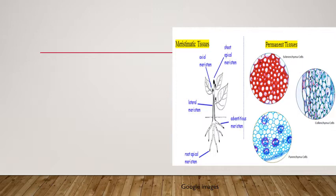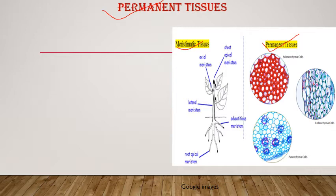Firstly, we will discuss permanent tissues. Meristematic tissues are cells with power of cell division, metabolically very active, with dense granular cytoplasm and a unique nucleus. Permanent tissues are made by the division of meristematic cells, and the process by which conversion from meristematic to permanent cells happens is called differentiation.